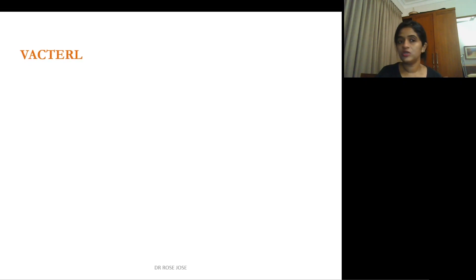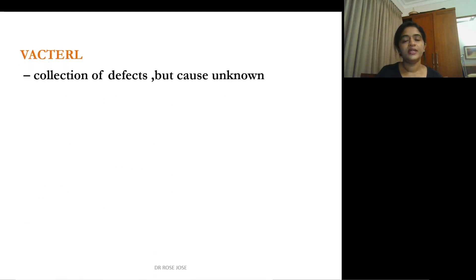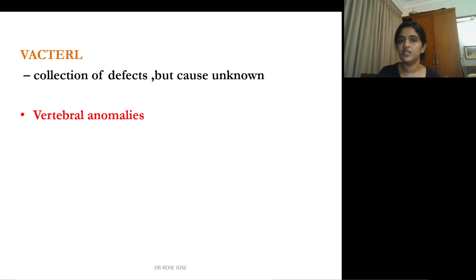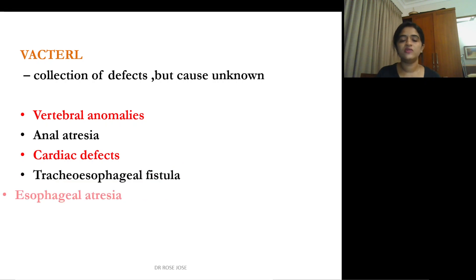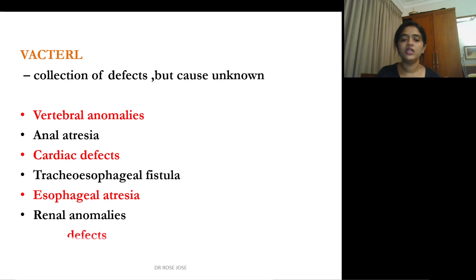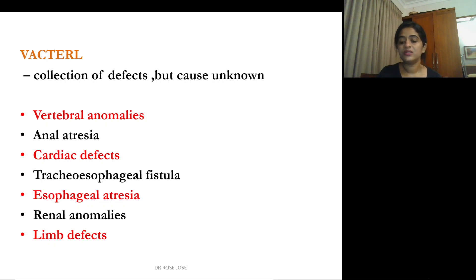A condition known as VACTERL is a collection of defects whose cause is usually unknown. The defects are: V for vertebral anomalies, A for anal atresia, C for cardiac defects, T for tracheoesophageal fistula, E for esophageal atresia, R for renal anomalies, and L for limb defects. This collection of defects is collectively termed VACTERL.